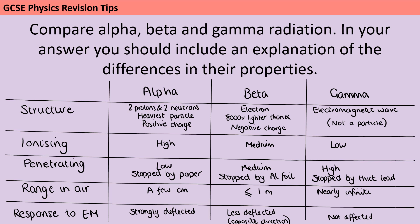If we think about the ionising power of these different types of radiation, the alpha particle is the most highly ionising for two reasons. Firstly, because it consists of two protons along with two neutrons, it has twice as much charge as the beta particle. But it's also much, much heavier, so if it interacts with another atom, it's far more likely that electrons are going to be removed and that atom ionised. In contrast, the beta particle has a lower mass and lower charge, and gamma radiation doesn't have a mass or charge at all. Regarding penetration and range in air — which are interlinked — the alpha particle being so much larger means it's much more likely to interact with other atoms and therefore be stopped, preventing it from travelling any further.